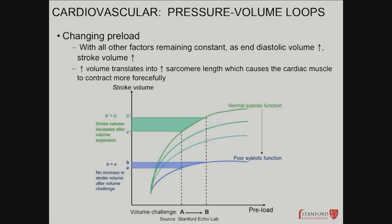The Frank-Starling relationship is an interesting relationship that basically tells us everything about cardiac physiology. When you have more blood filling the heart, at the muscular level there are sarcomeres — as we studied in the MSK lecture. The sarcomeres lengthen because the heart needs to get bigger to hold more blood. As the sarcomeres lengthen and then contract, they generate a more forceful contraction in healthy hearts, pumping out more blood. So the more blood comes in during diastole, the more will be pumped out — that is the Frank-Starling relationship.